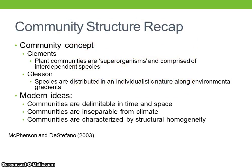McPherson and DiStefano present a nice recap of the major ideas in community ecology. Clements' organismic concept theorized that plant communities are superorganisms comprised of interdependent species. In contrast, Gleason's individualistic, or continuum, concept theorized that species are distributed in an individualistic nature along environmental gradients. More modern ideas of communities include that communities are delimitable in time and space, that communities are inseparable from climate, and that communities are characterized by structural homogeneity. While neither Clements' nor Gleason's ideas have been fully supported in the ecological field of study, both provide a theoretical framework for community ecology.